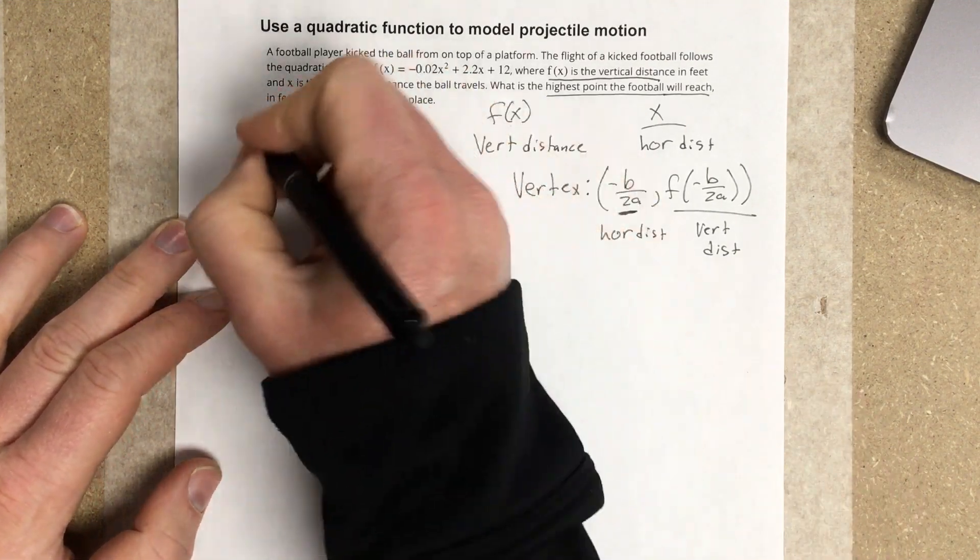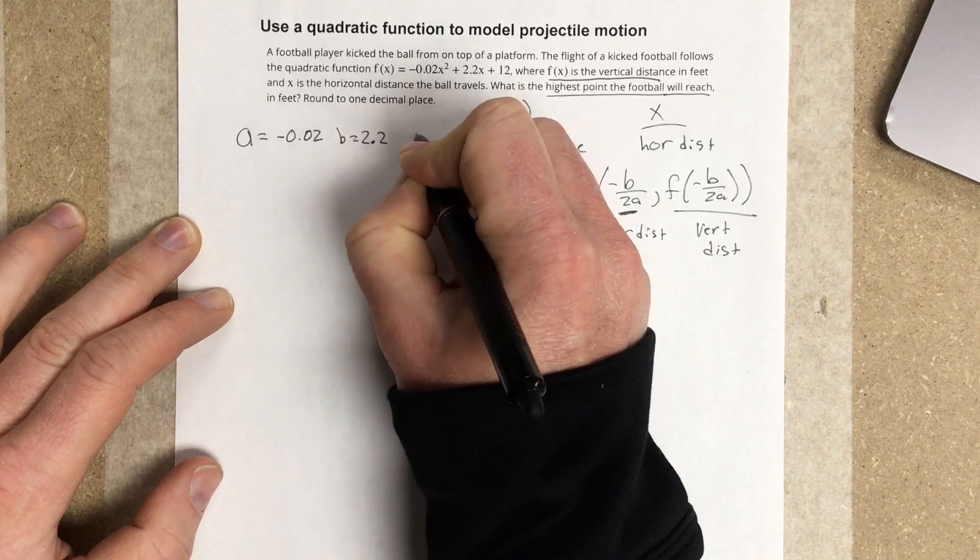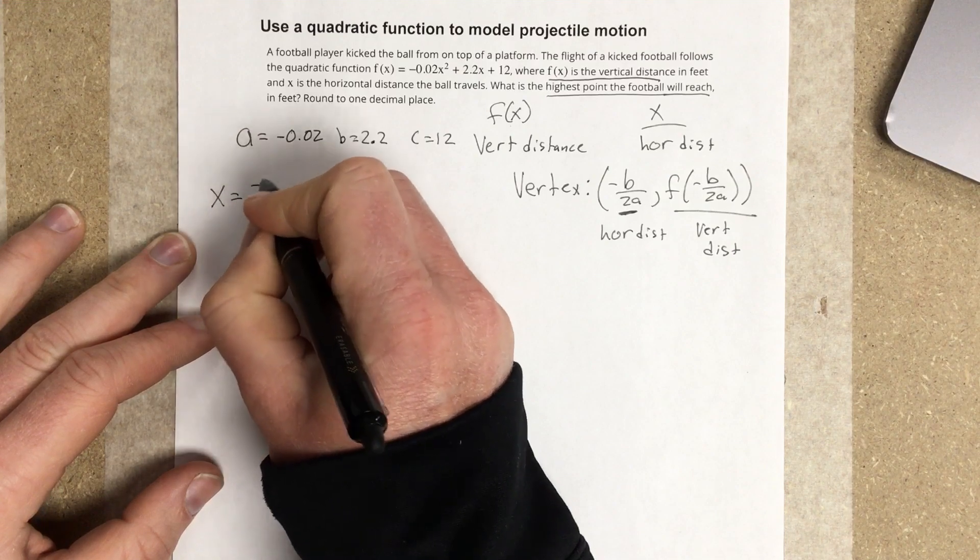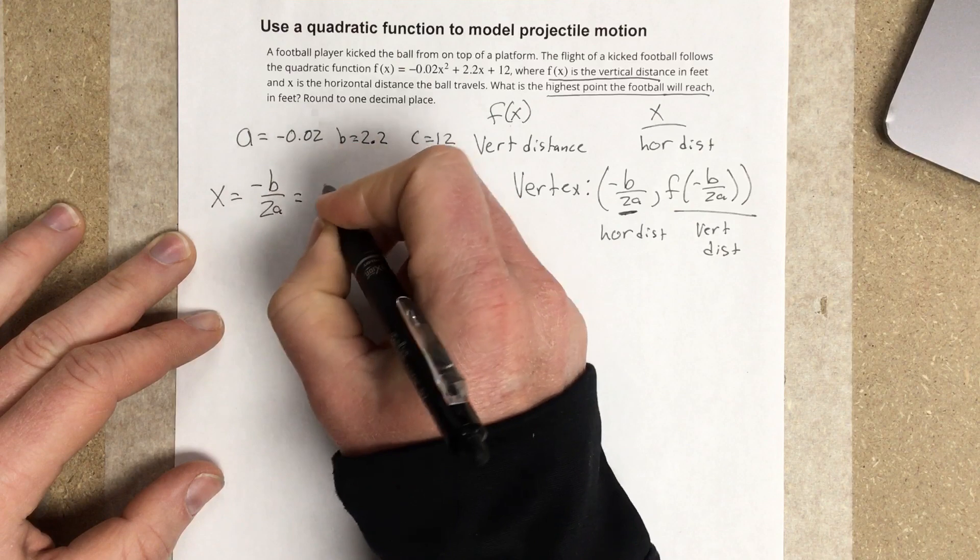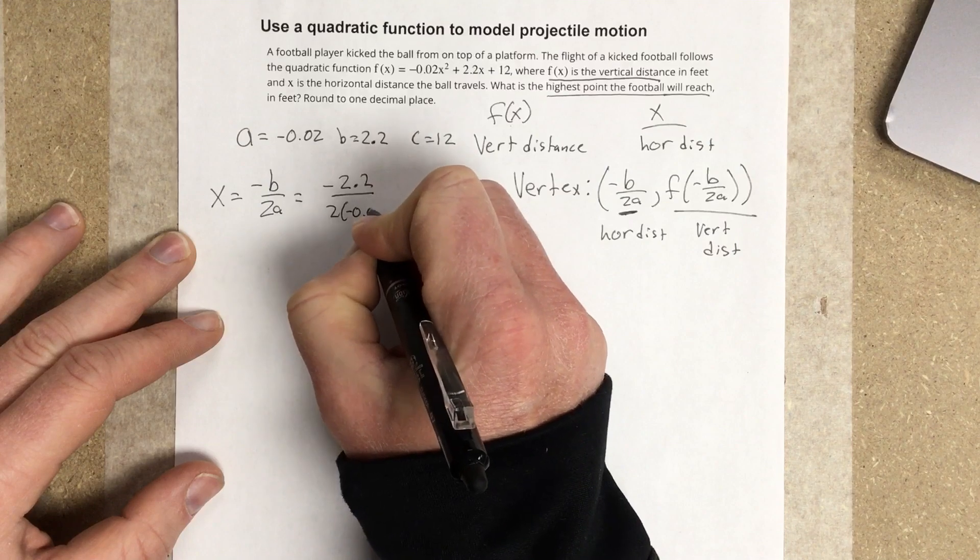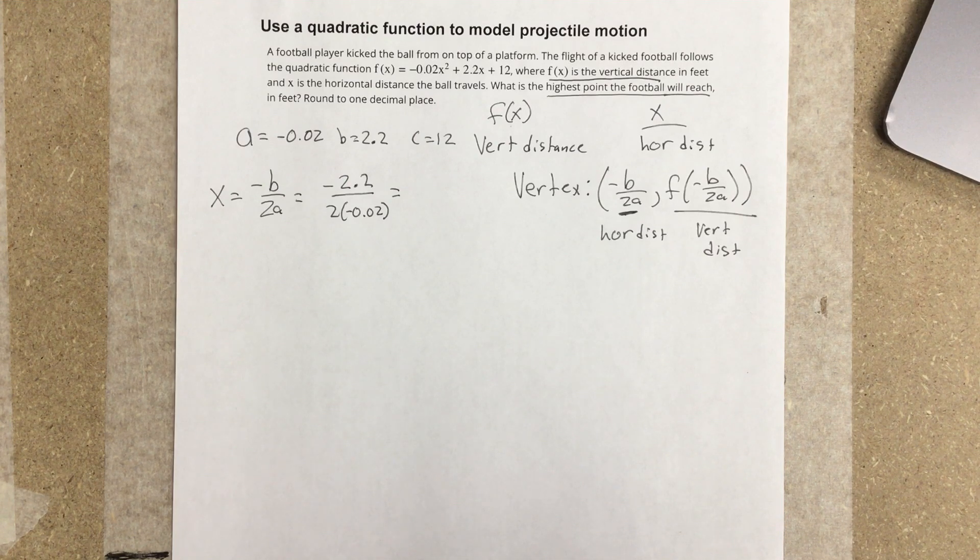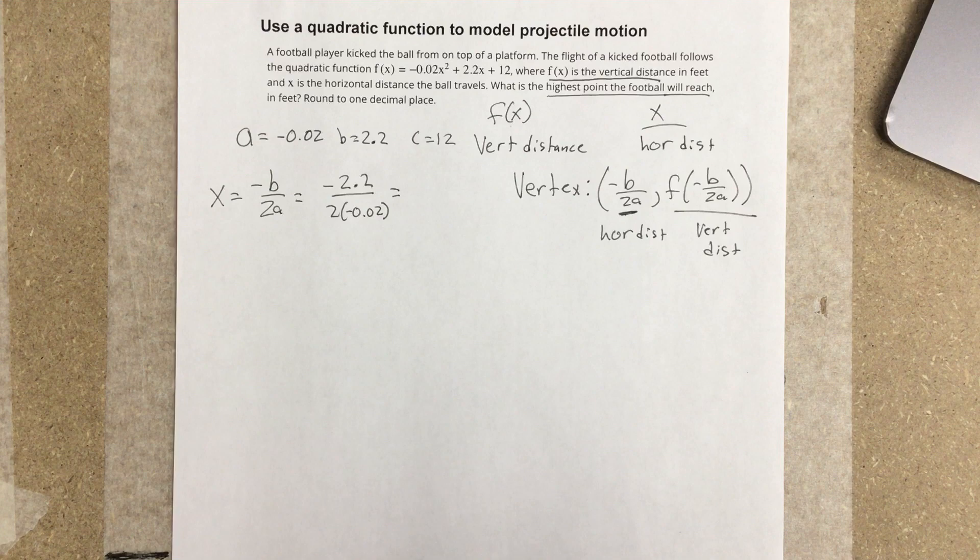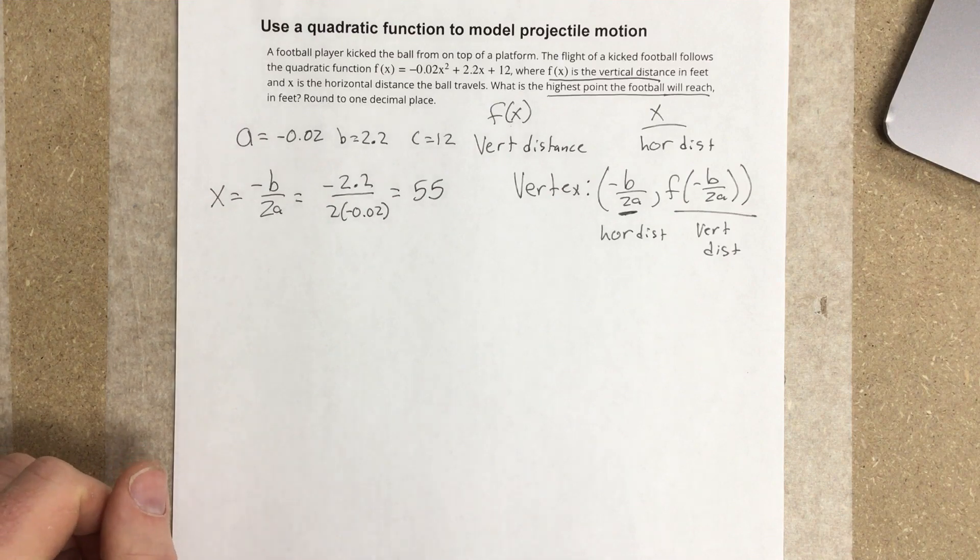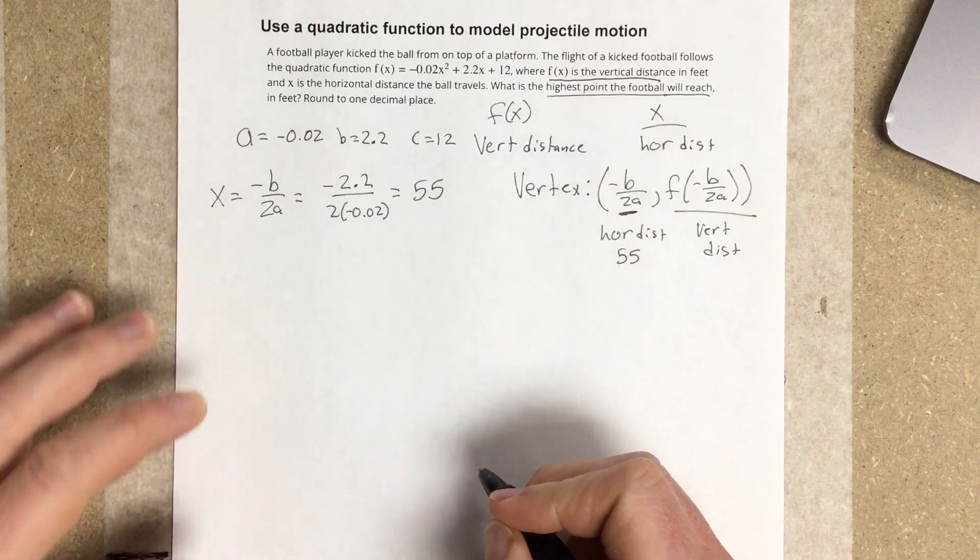Let's start by writing down what our values are. a is -0.02, b is 2.2, and c is 12. So x equals negative b over 2a. I plug in my values: negative 2.2 over 2 times negative 0.02, and I get 55. So 55 is my horizontal distance. I can put that right here. That's my horizontal distance, but I need the vertical distance.